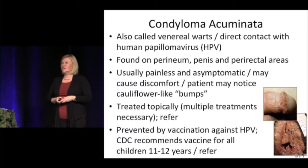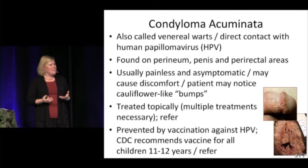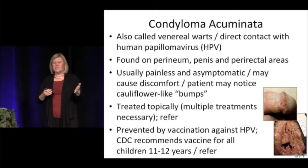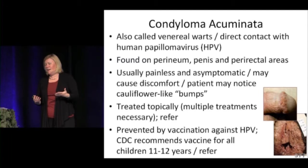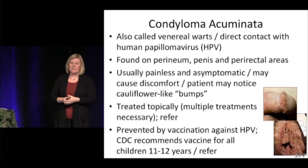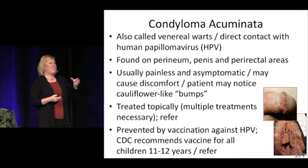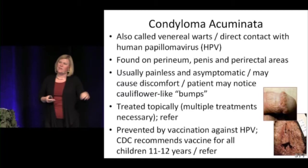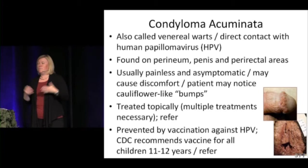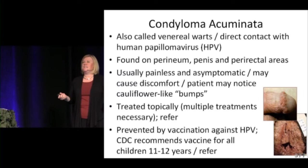Condyloma acuminata are HPV-related venereal warts found on the perineum, penis, or perirectal areas. They're usually painless — mostly cosmetic — and appear as cauliflower-like raised bumps. Treatment is topical or with cryotherapy (frozen nitrogen); patients should be referred for these treatments. HPV vaccination is recommended by the CDC for young women and can prevent these warts.